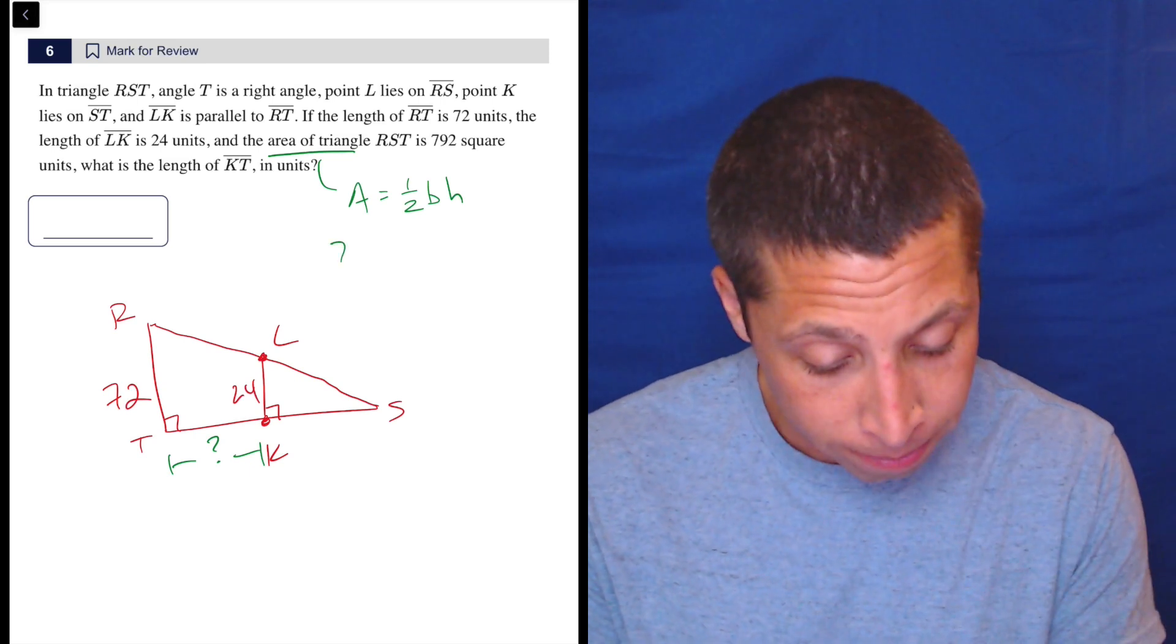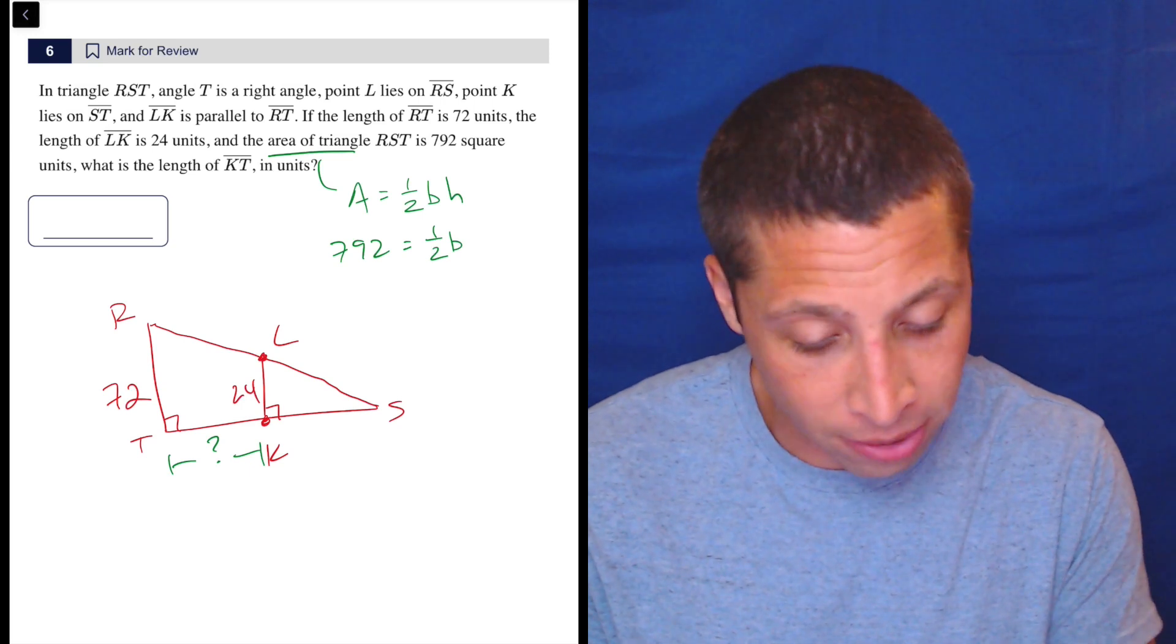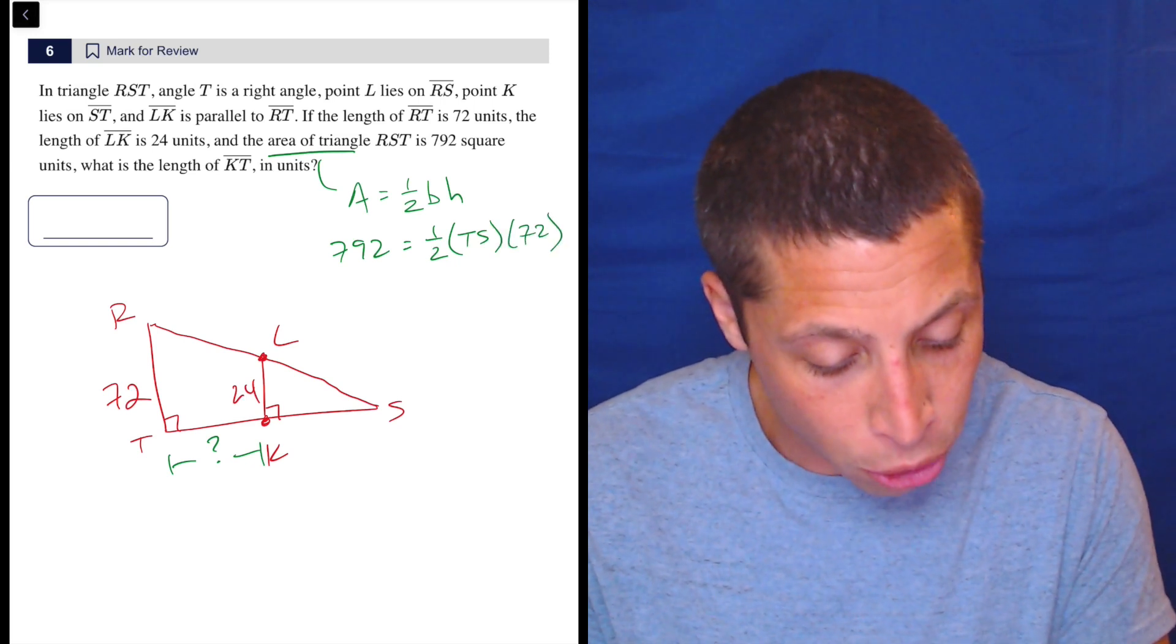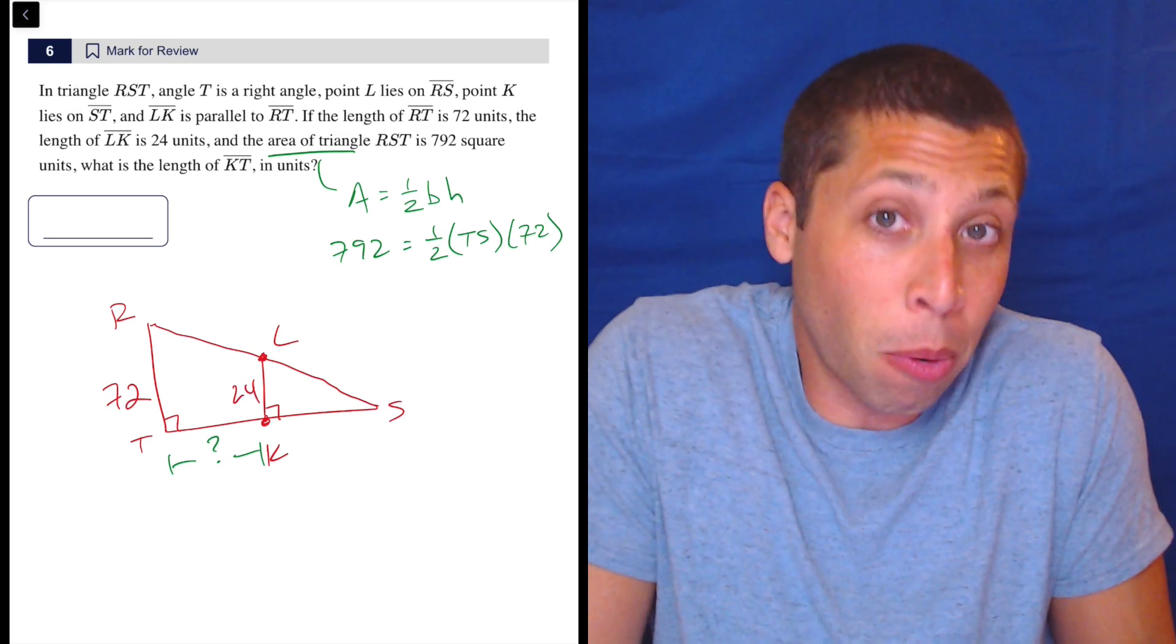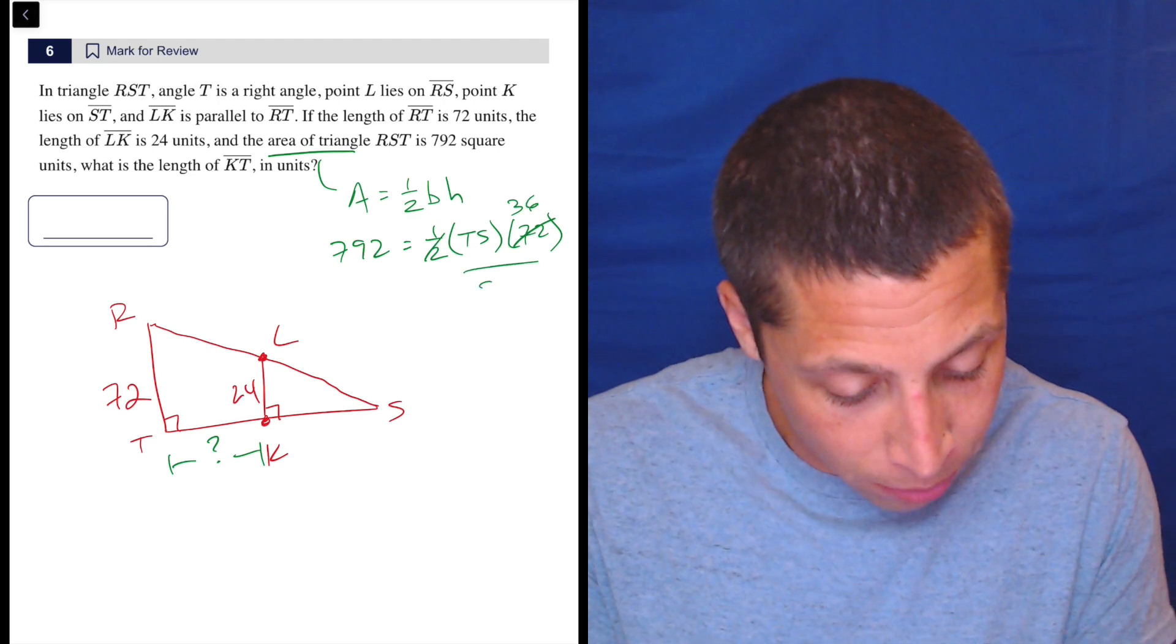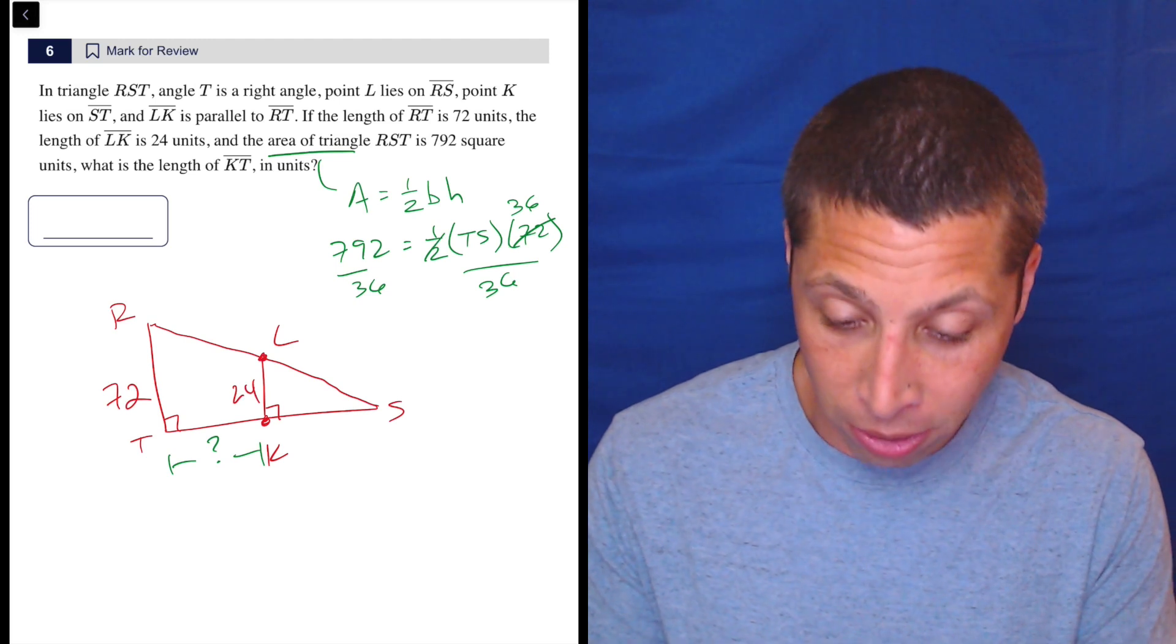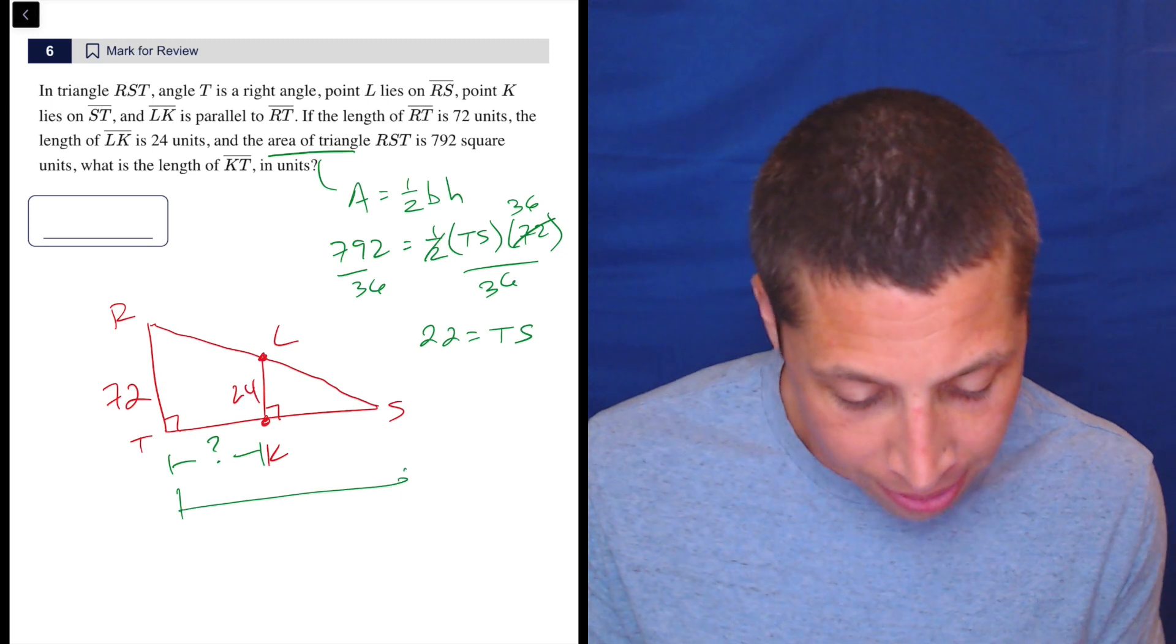So what do we have? Well, we have the area, 792. We have the height. Let's leave the base as TS. In fact, let's even label it that so that we don't make any mistakes. So TS is the base and the height is 72. Well, let's solve for TS. I don't know why, but it's what we can do, so might as well do it. So one half of 72 is 36, and then we divide both sides by 36. So 792 divided by 36 is 22. So 22 is the length of TS. So that's this whole thing.